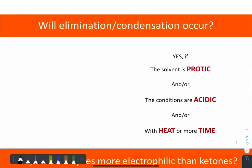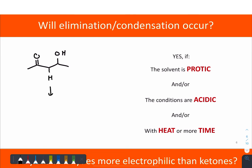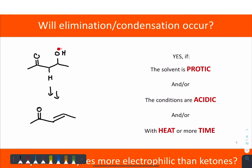How do we know if that condensation step is going to occur? Generally it'll happen if the solvent is protic — as we saw in the last example with ethanol. The conditions are acidic, because that makes a better leaving group: it makes water as a leaving group instead of hydroxide. It will also occur with heat or more time.